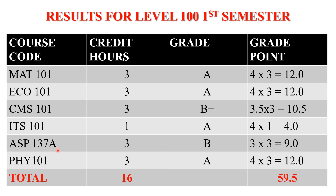For ASP 137A, it is a 3 credit hour course and the student had grade B. The numerical value assigned to B is 3, so 3 × 3 = 9.0. For PHY 101, also a 3 credit hour course with grade A — numerical value 4.0 — so 4 × 3 = 12.0. Remember, the formula for calculating GPA is total grade point divided by total credit hours.